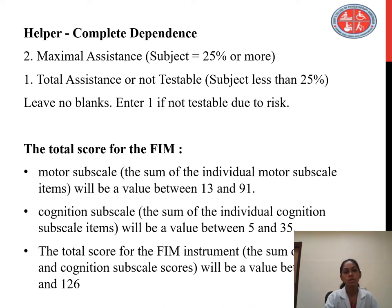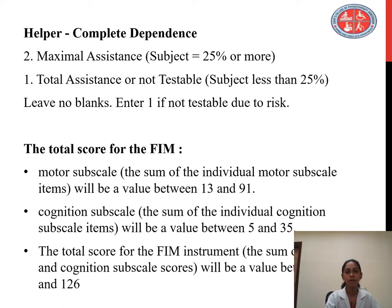The total score of the FIM motor subscale includes the sum of the individual's motor subscale items, with values between 5 and 35. The total score of the FIM instrument will be a value between 18 and 126.